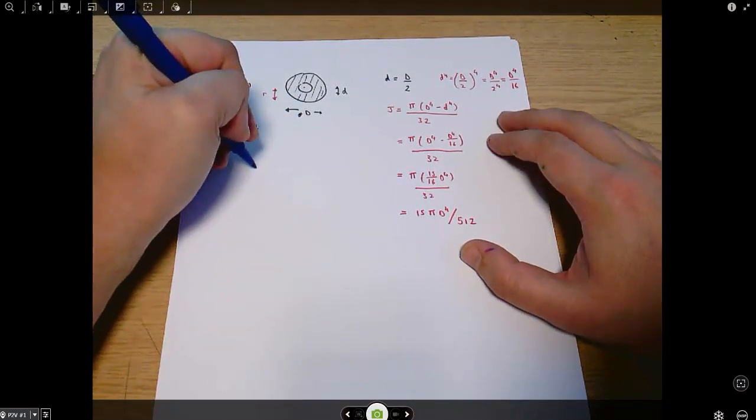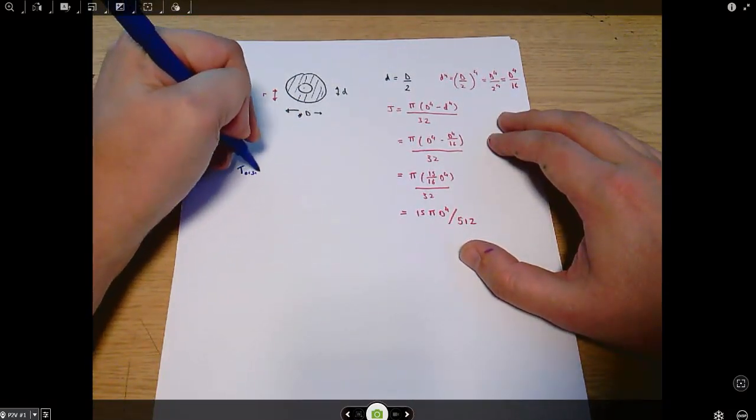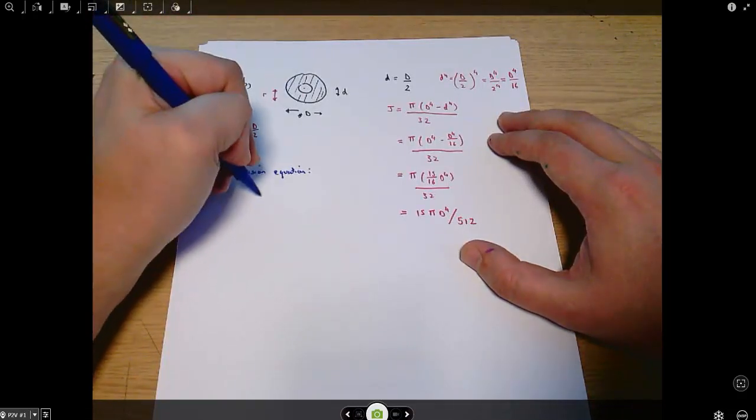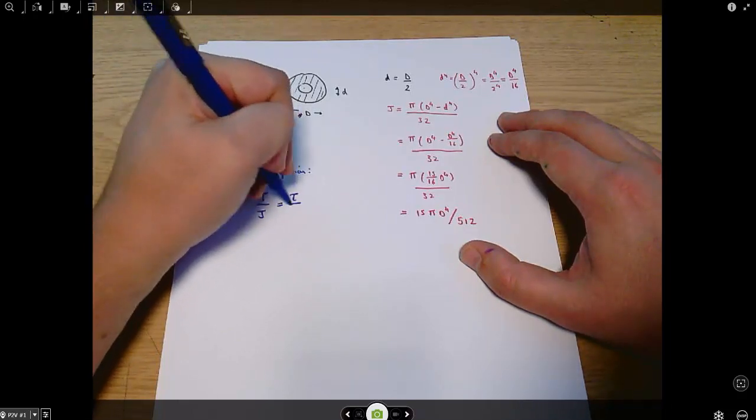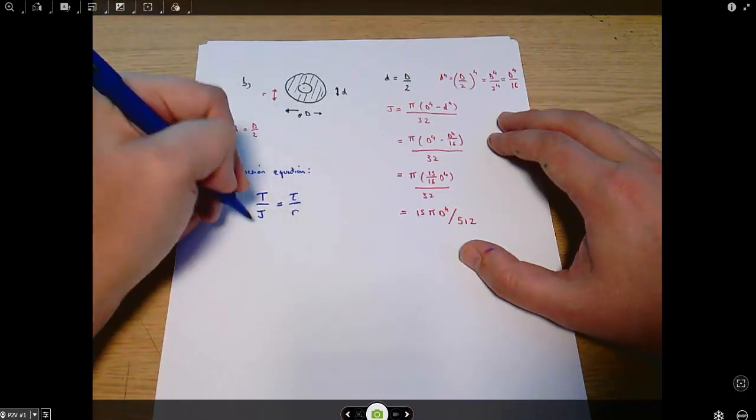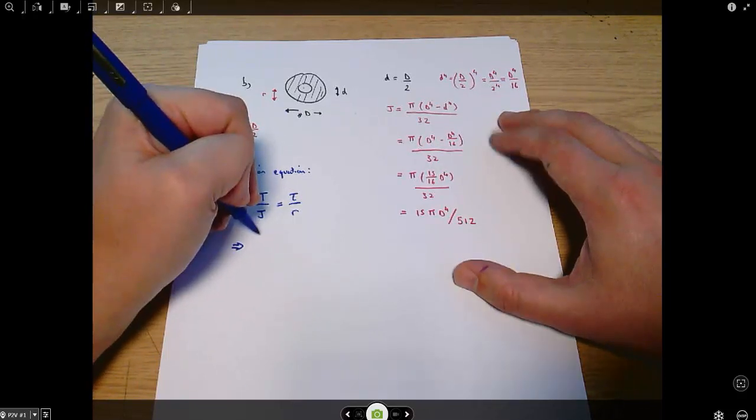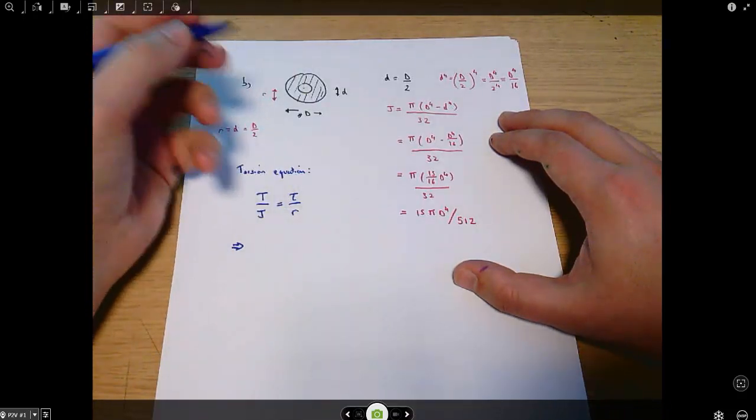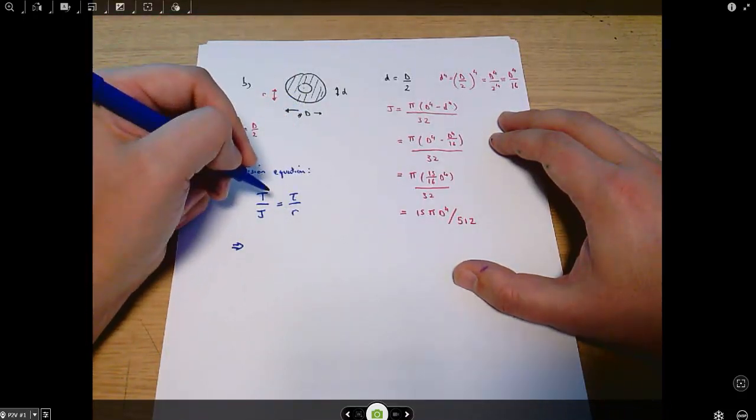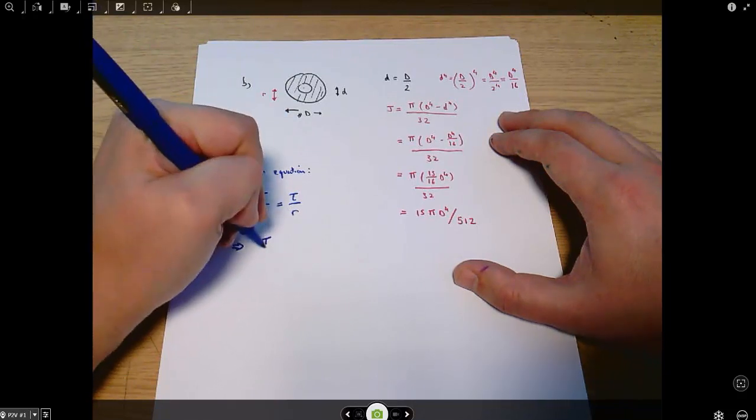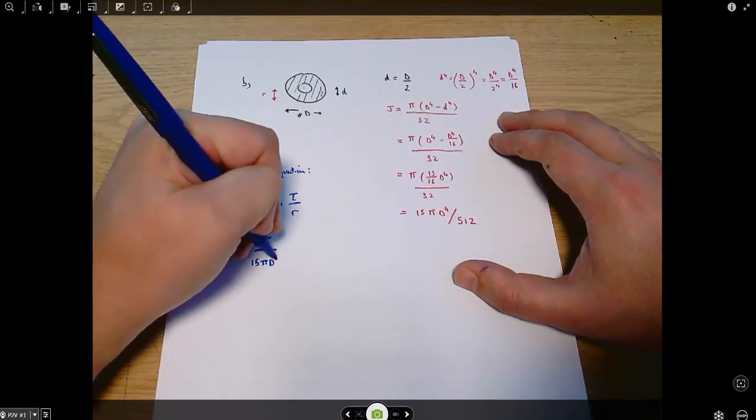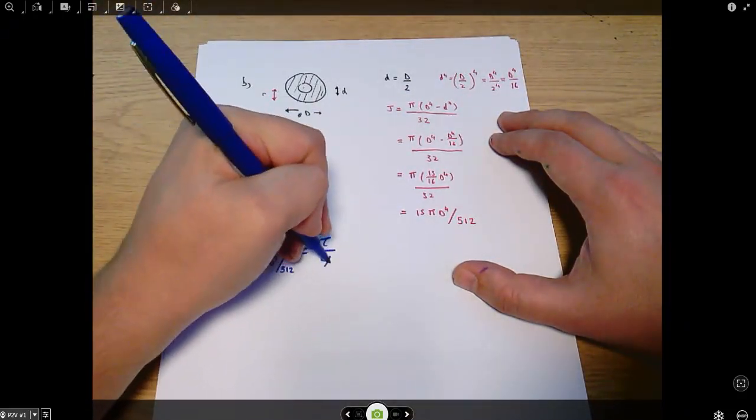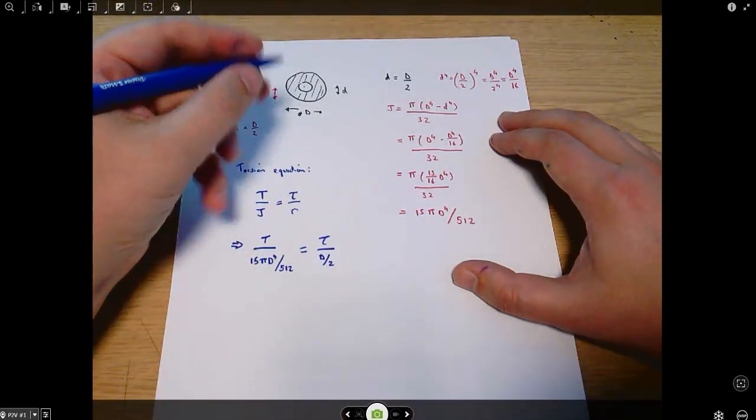We use the torsion equation and say T over J equals tau over R. Therefore, we've got the same torque as before. Well, I'll do it all in algebraic terms and then only put numbers in at the end. So T over 15 pi capital D to the 4 over 512 equals tau over capital D over 2.